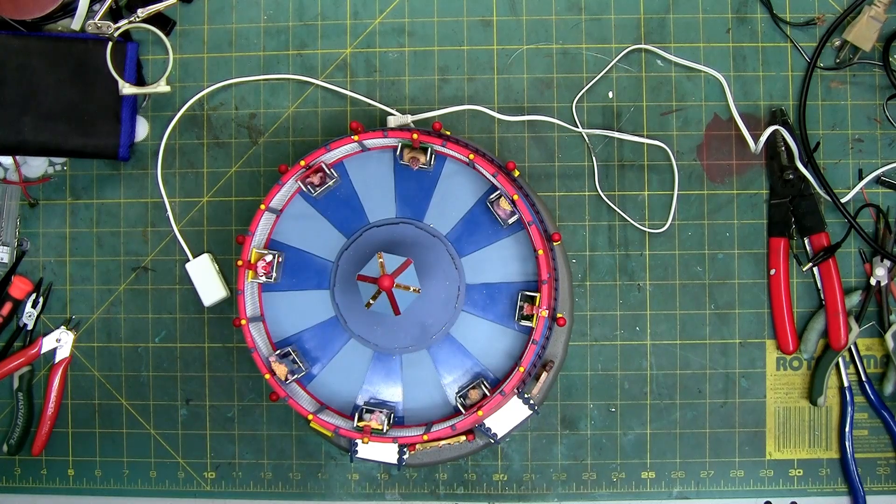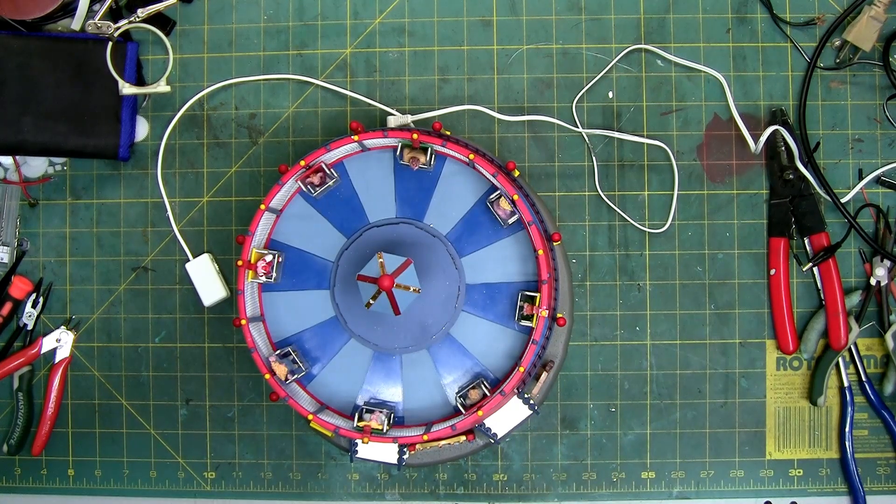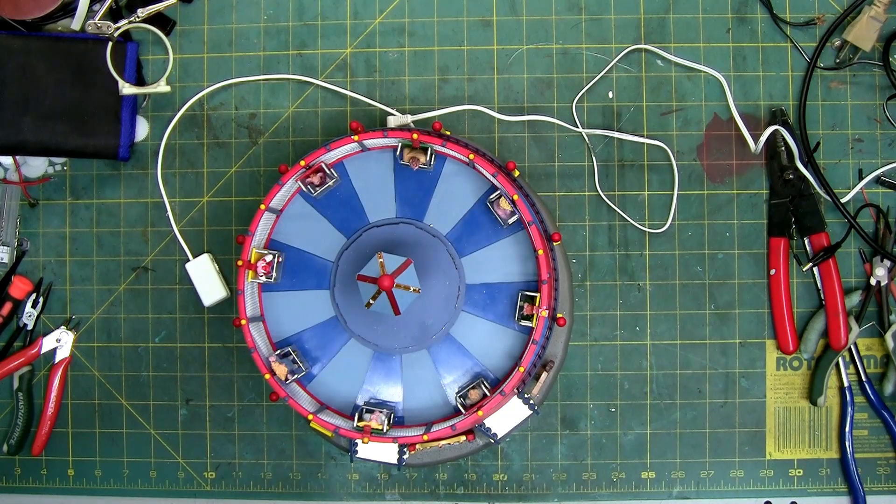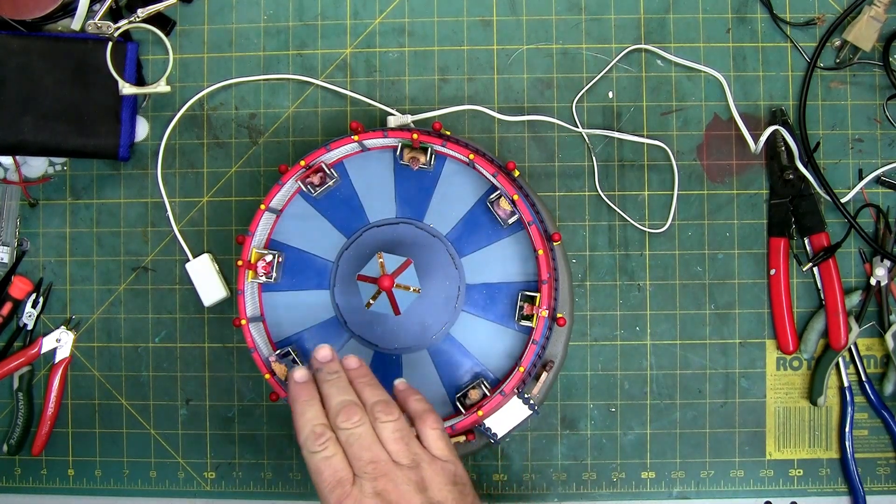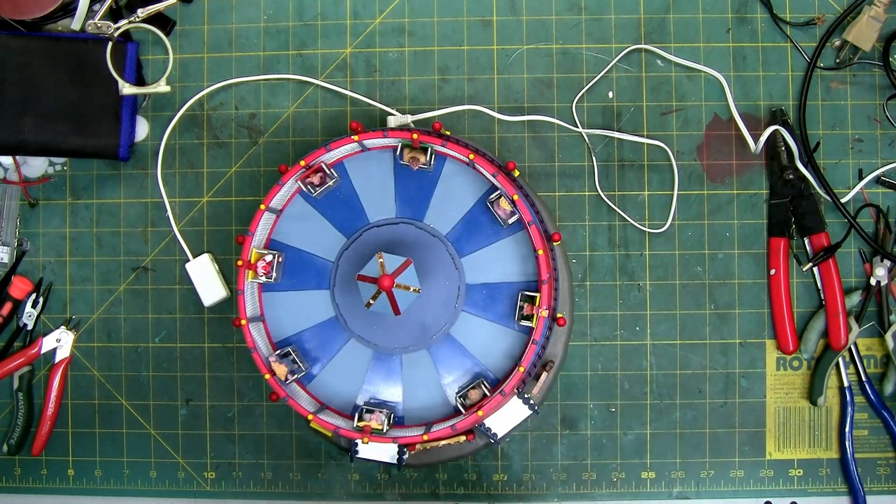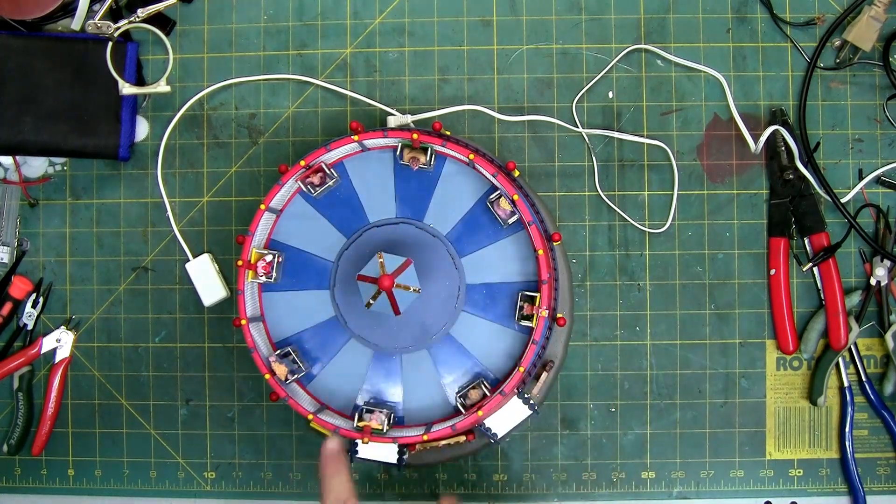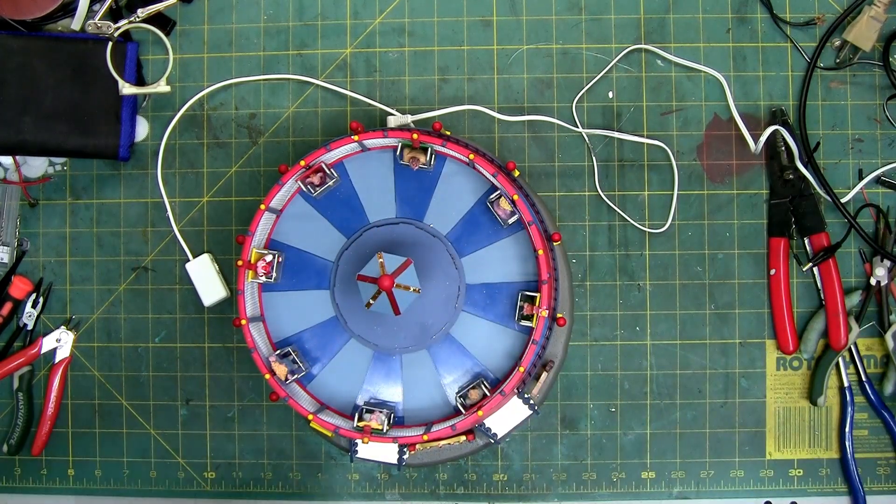In electricity, like in most things in life, least path of resistance. A shorted motor has less resistance than all the components in here. The lights, everything. So electricity comes in and says, hey, look, it's an easy way to get back to our original source.